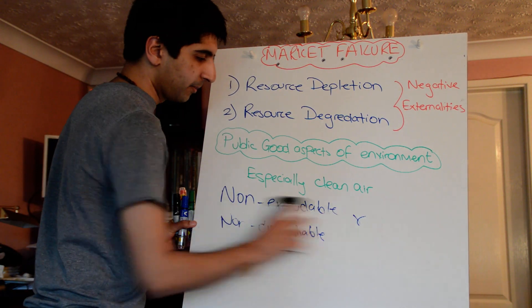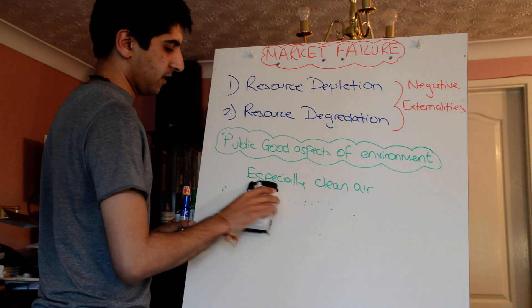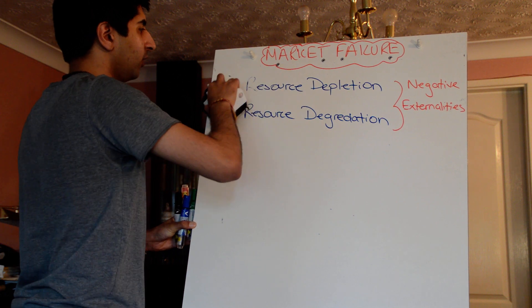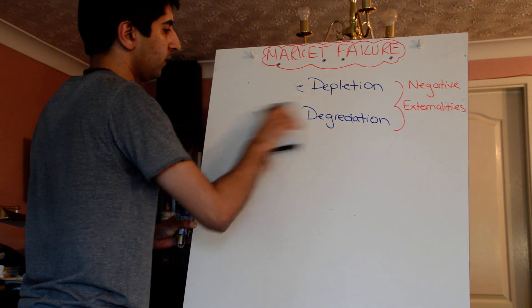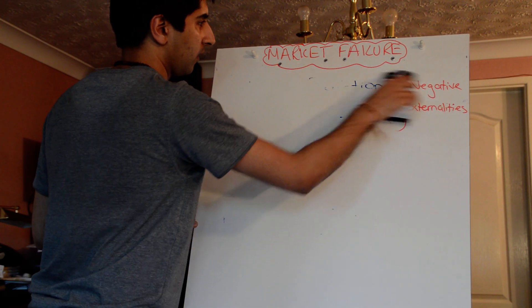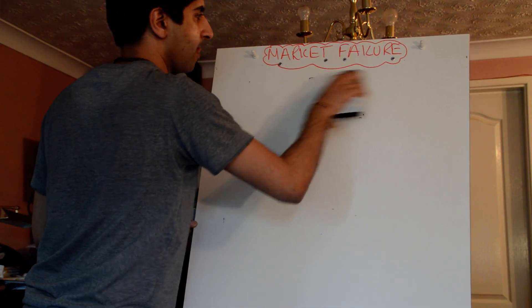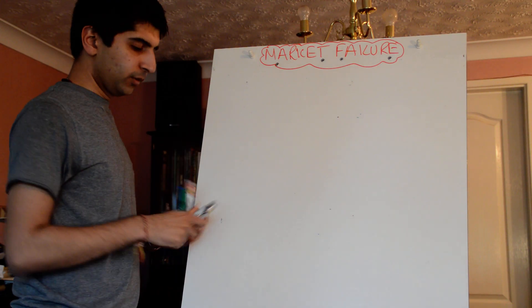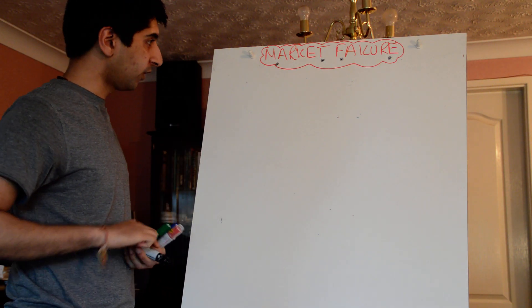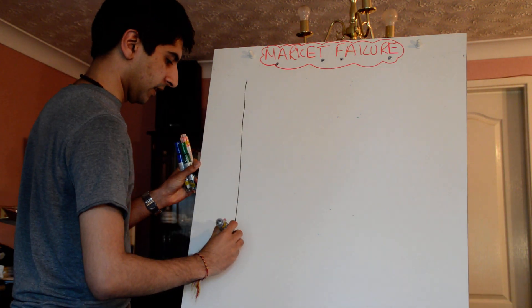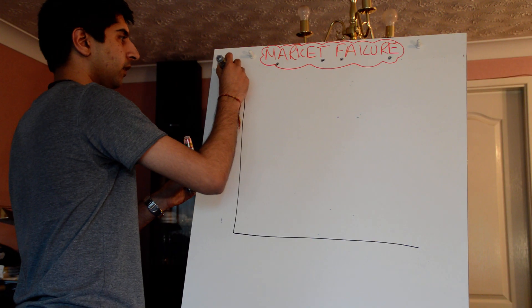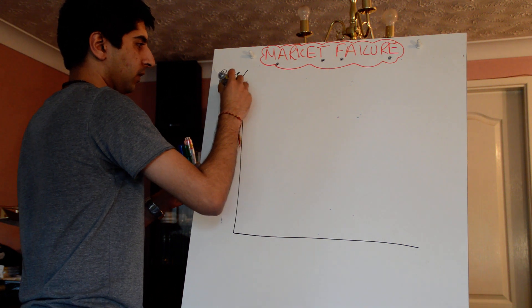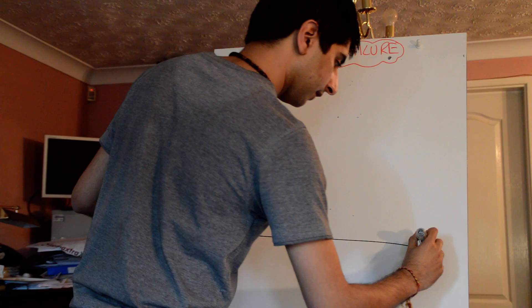Another important thing, just to remember from last year, is the diagram for negative externalities. We need to be comfortable drawing that diagram again. So we'll have our two axes as normal: on the y-axis we'll have price, costs and benefits, and on the x-axis we'll have quantity.